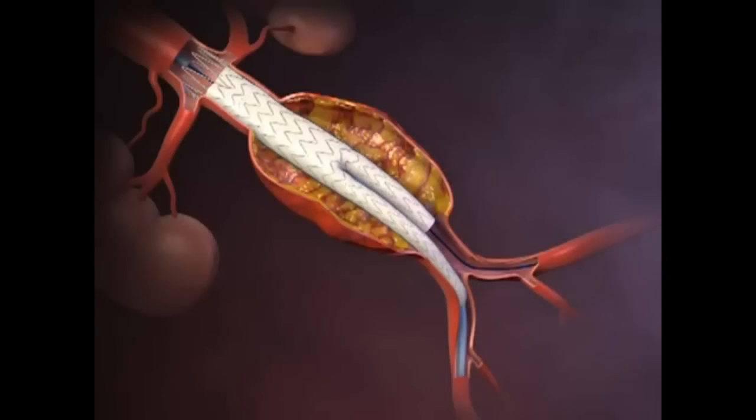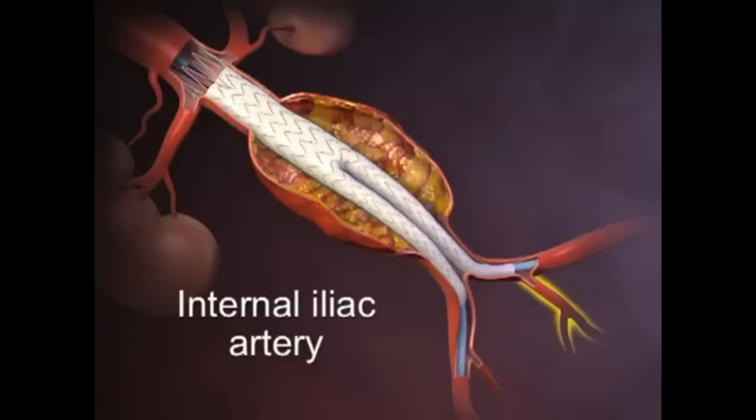The contralateral limb component of the stent graft is then introduced and deployed with overlap sufficient to prevent leakage around the junction of the main body of the device and the proximal end of the limb, and so that the distal end of the contralateral limb is located superior to the internal iliac artery.